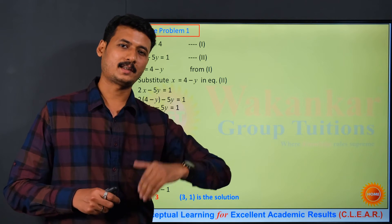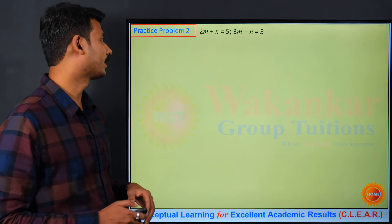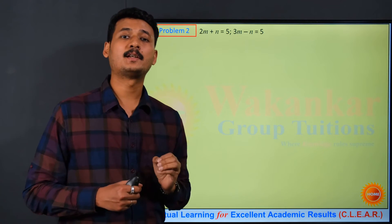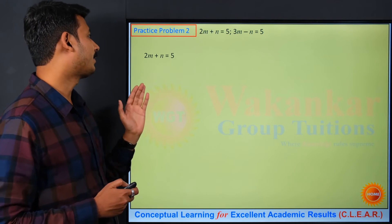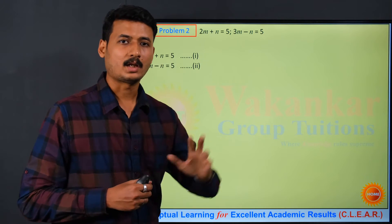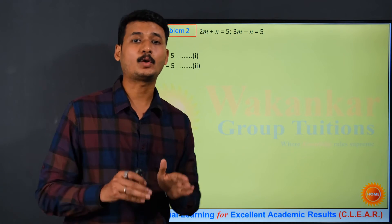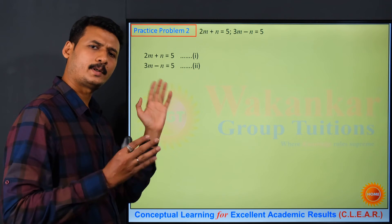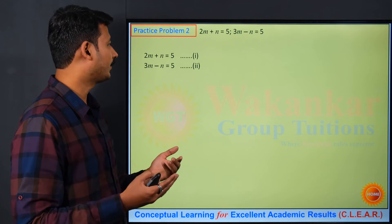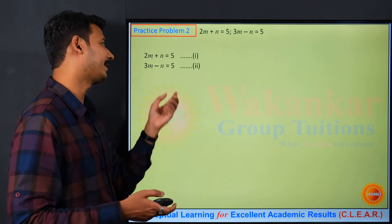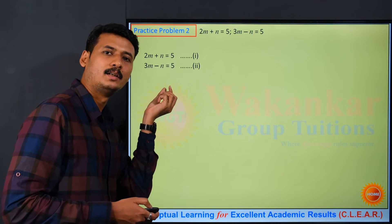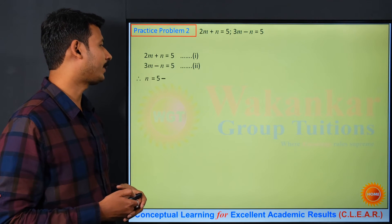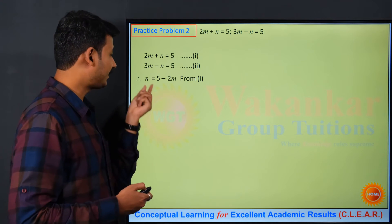Now let's take the second practice problem. We have two equations: 2m plus n equals 5 (equation 1) and 3m minus n equals 5 (equation 2). The coefficient of n is 1 in equation 1 and minus 1 in equation 2 — both will avoid the denominator. Let's select equation number 1 and express n in terms of m: n equals 5 minus 2m.